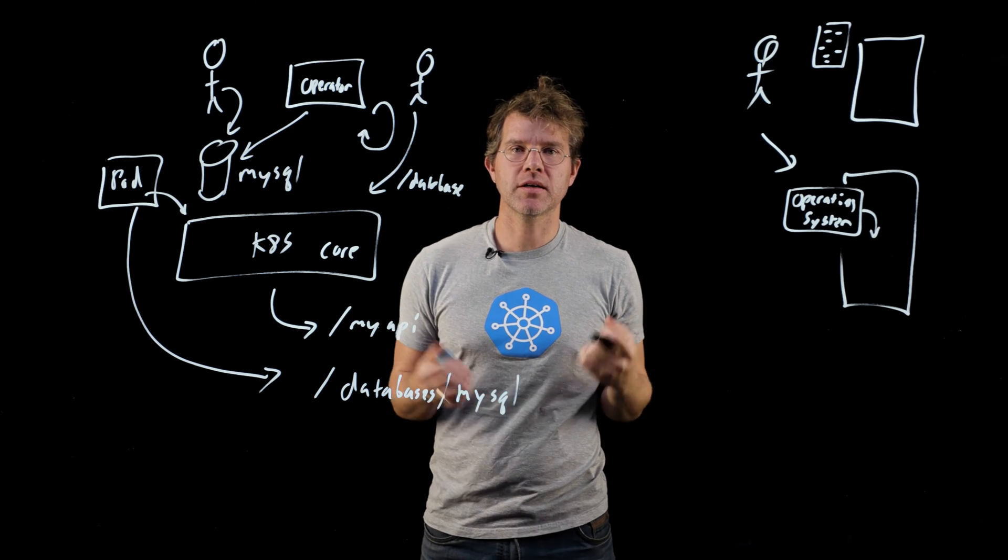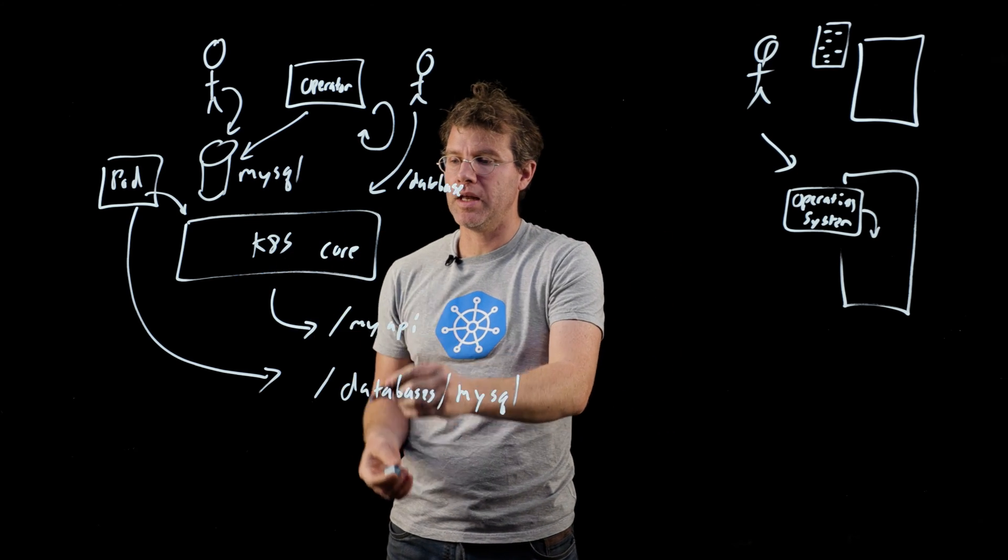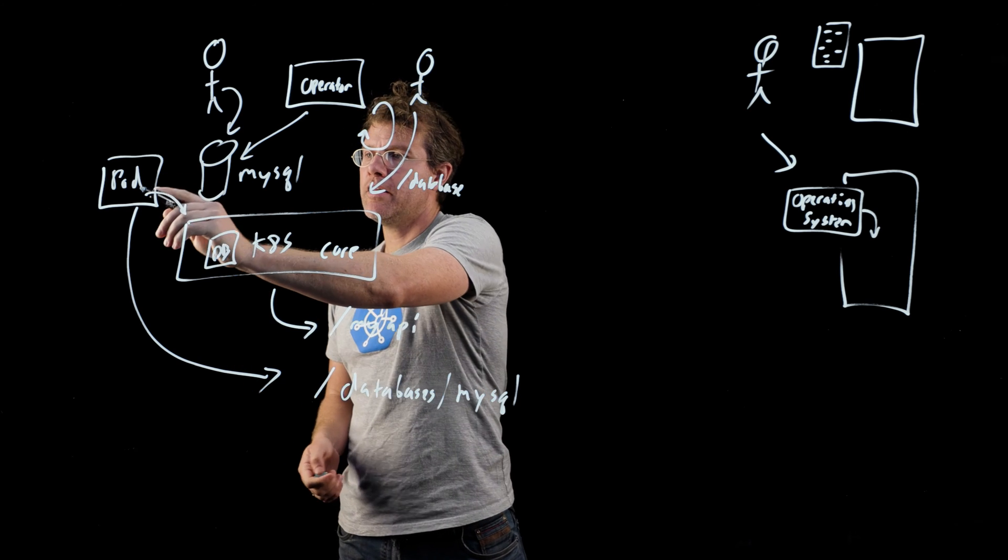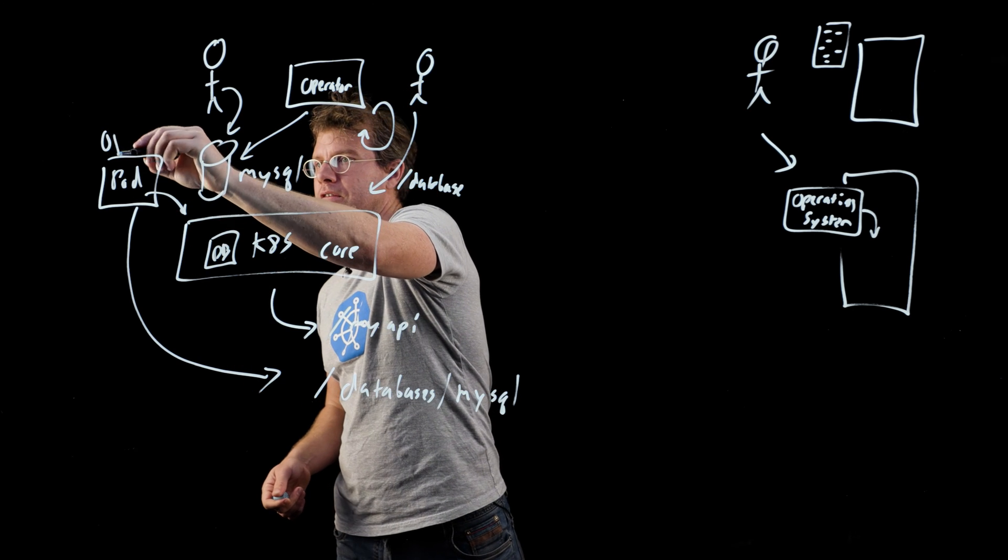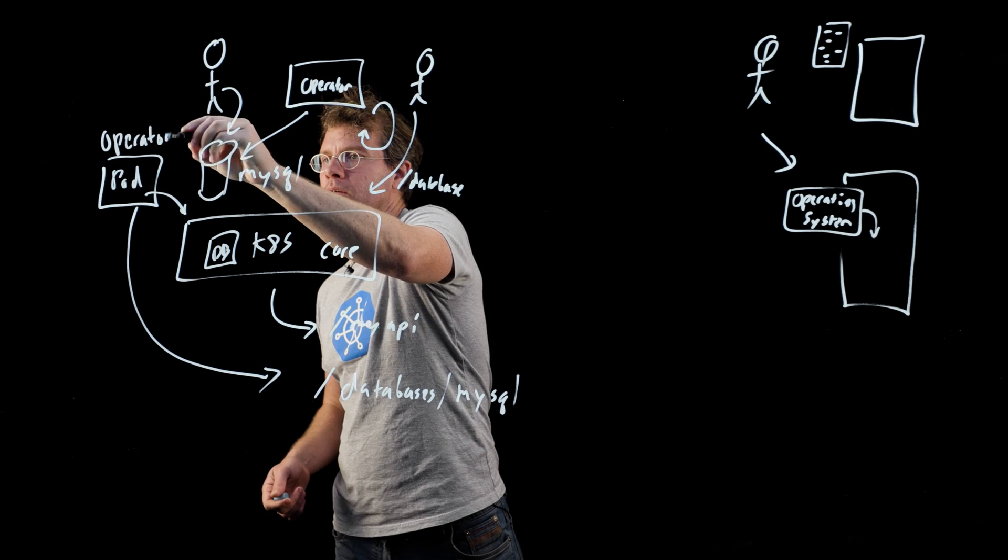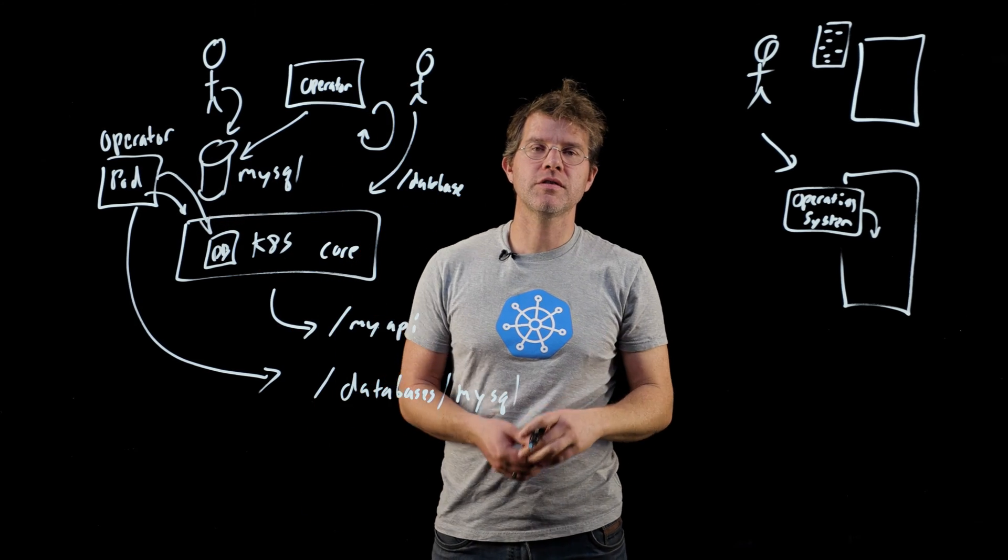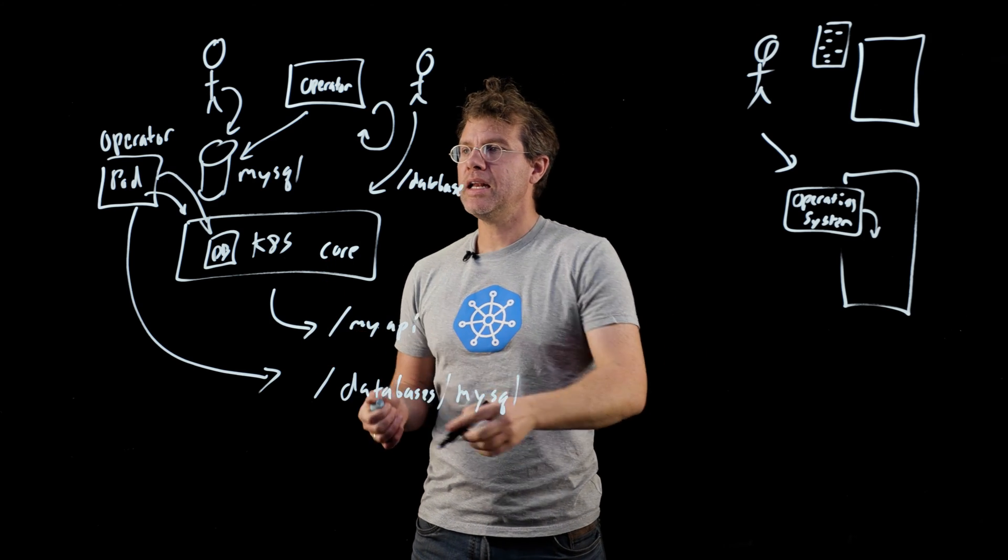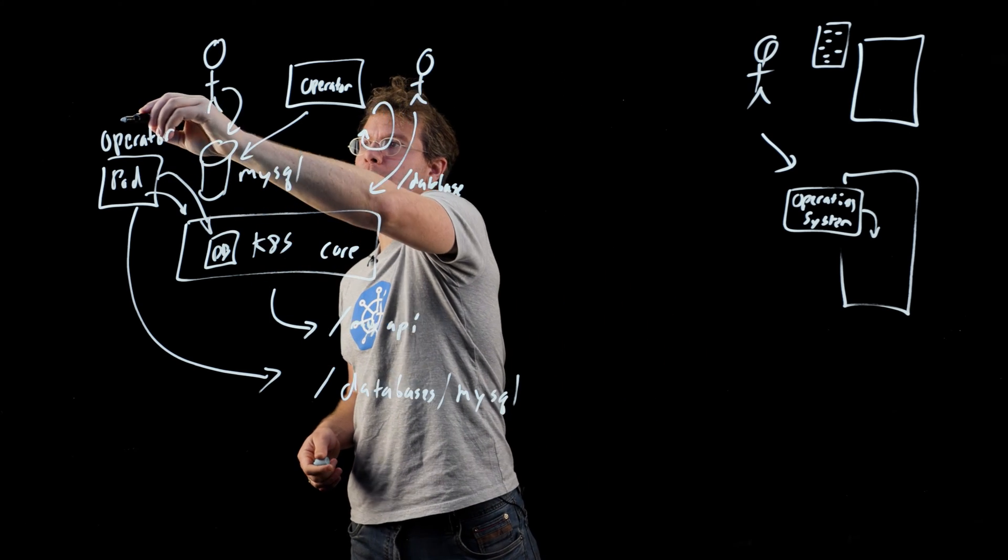And when that new API object comes into existence inside of Kubernetes, so there's a new database object here, the operator—this is the operator code—notices this new resource has been created, notices that someone has requested that this database be created, and it actually schedules even more pods.